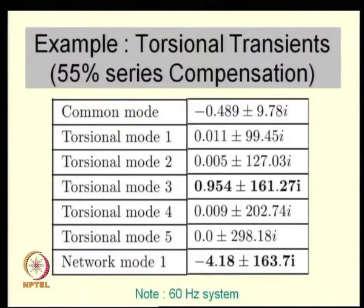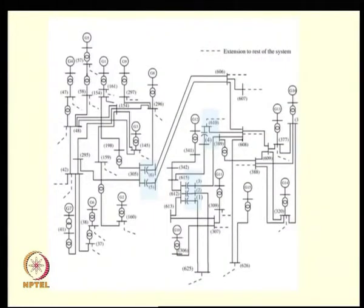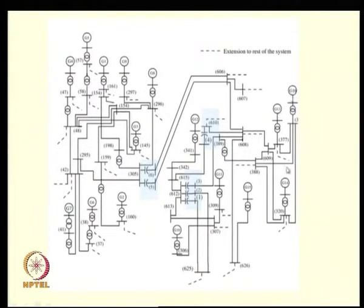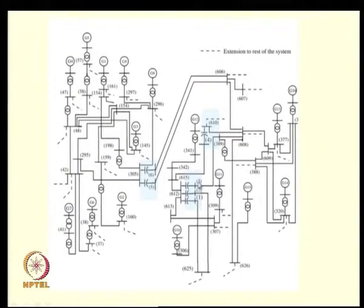There are other practical situations to consider. For example, you can have several series-compensated lines — say 1 through 6 — in a network with several generators, where each generator may actually represent several units of a power plant. You can then have many sub-synchronous network modes and many torsional modes. A linearized analysis is needed to check the actual effect of all these network modes on individual turbine-generator shafts.